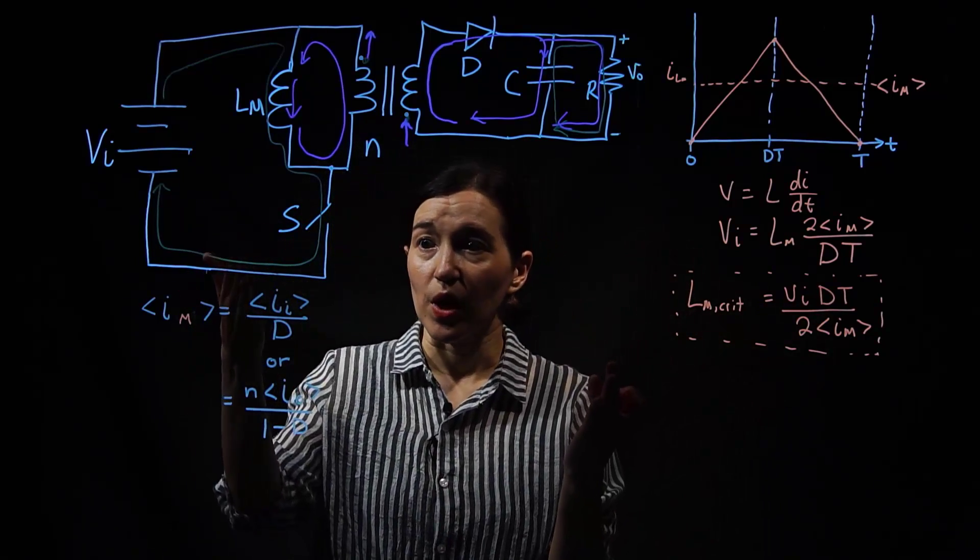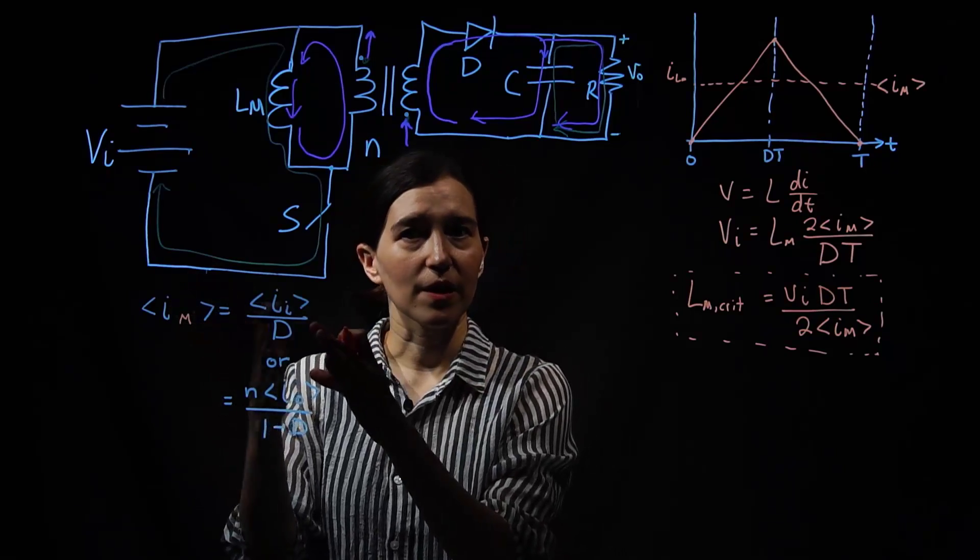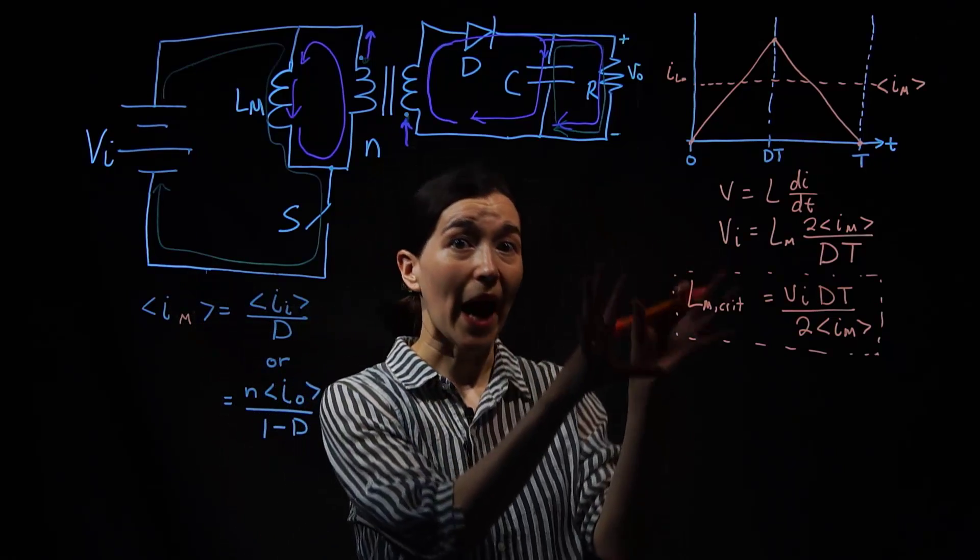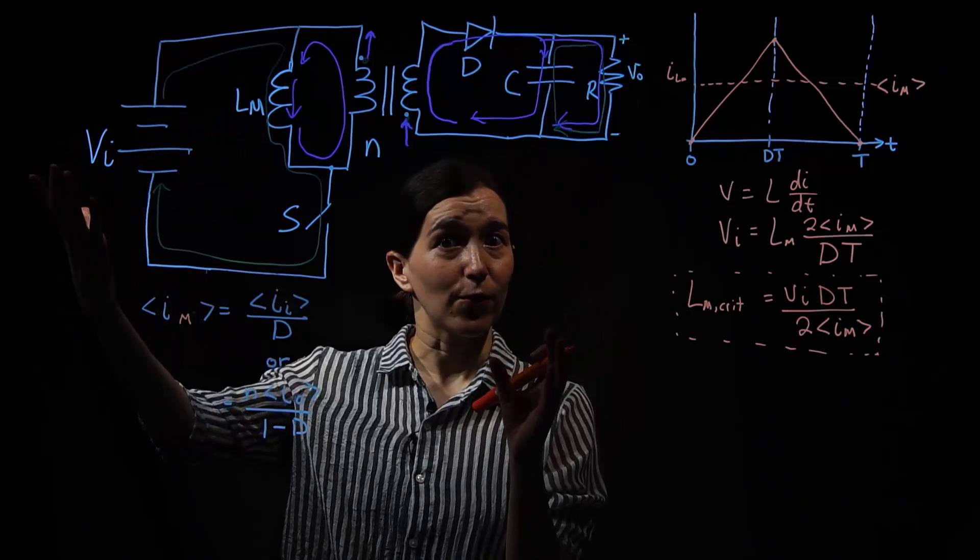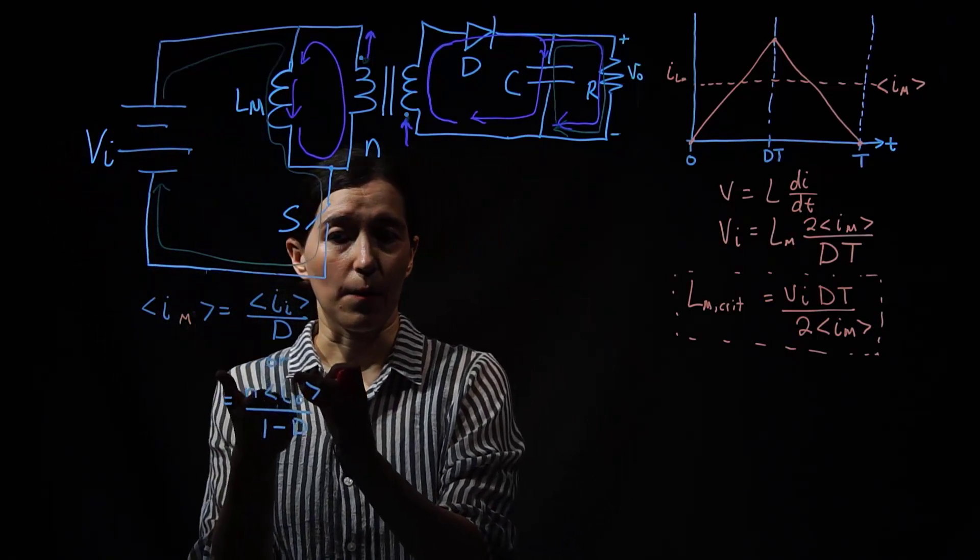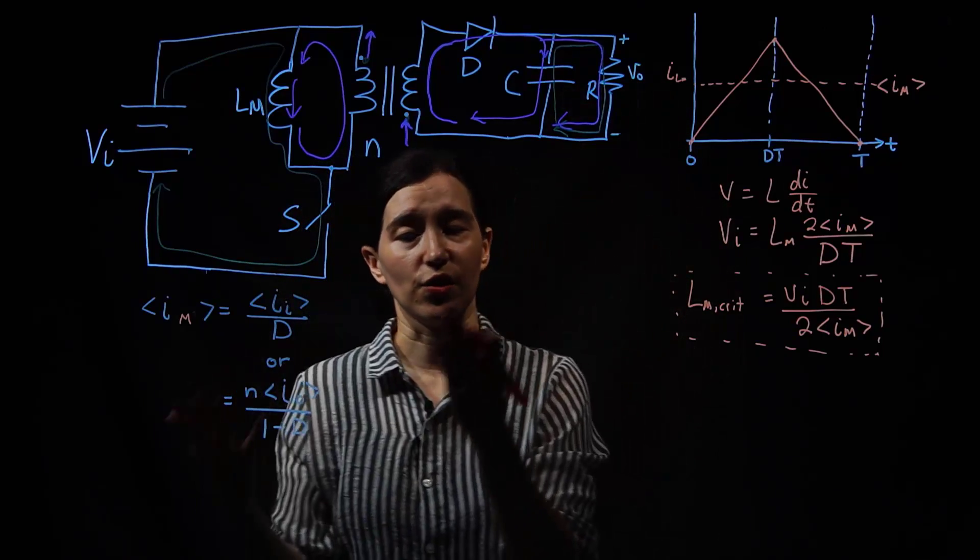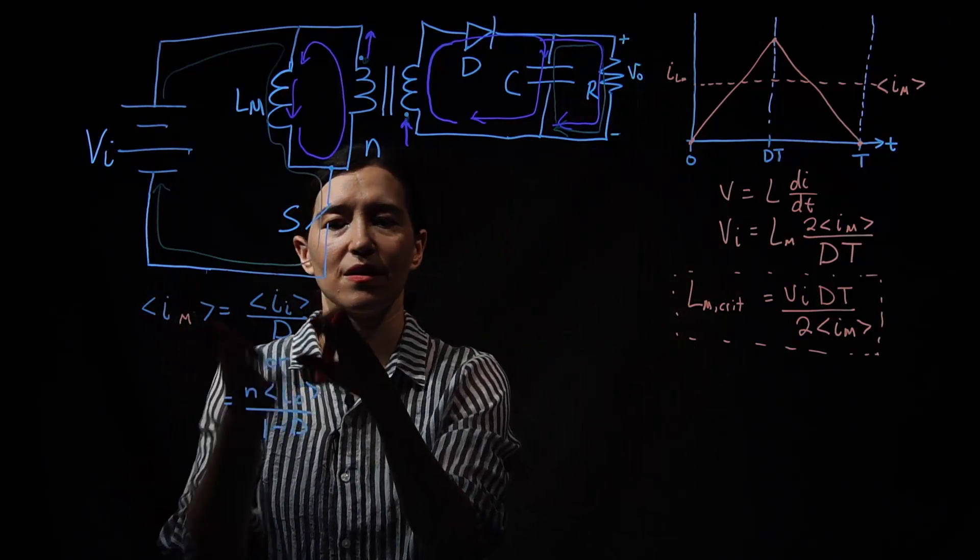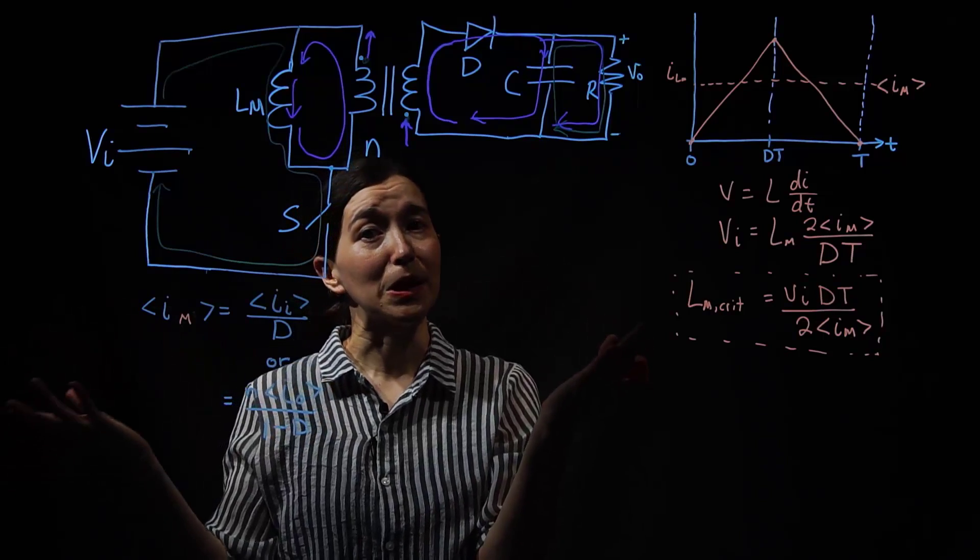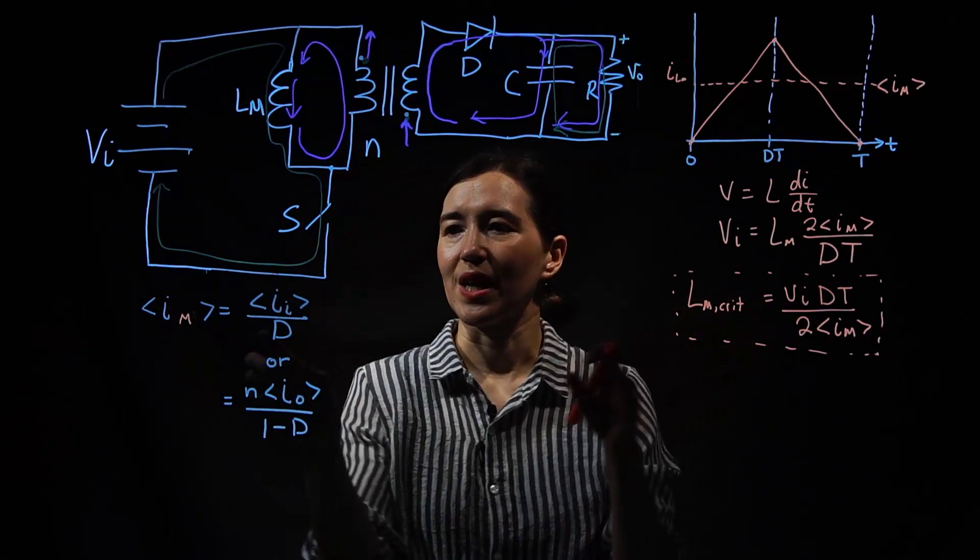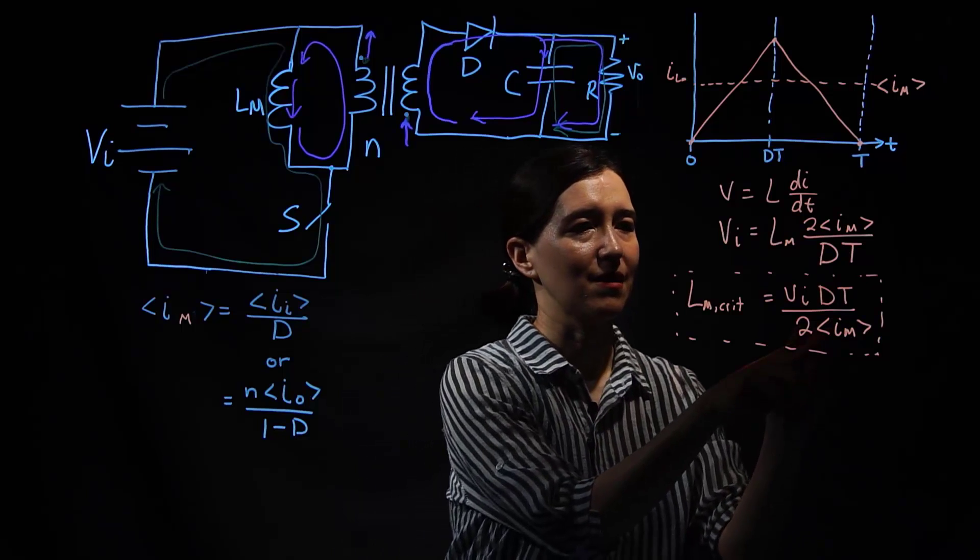What's the difference between these? Well, if you know your input current, you can usually, if you know the power of the load and you know the input voltage, you can figure out the input current. Or if you know the output current, you may know the output voltage in the resistor and then you can solve for that. So let's just solve both of these to be complete. So we can take this value and plug it into this Im.